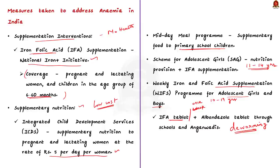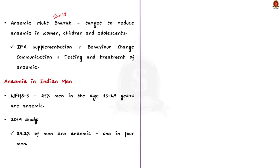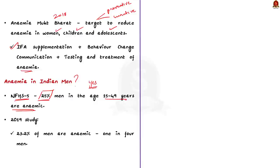In 2018, the Anemia Mukt Bharat Strategy was launched with the target to reduce anemia in women, children, and adolescents, including preventive and curative mechanisms like iron folic acid supplementation, intensified behavior change communication, testing, and treatment. As per National Family Health Survey 5 data, around 25% of men aged 15–49 are anemic in India, compared to 57% of women and 52.2% of pregnant women in the same age group. A private study found that 23.2% of men aged 15–54 are anemic — meaning nearly one in four men in India is anemic.